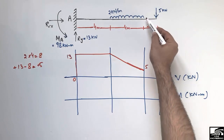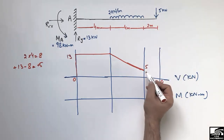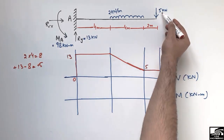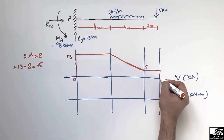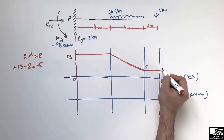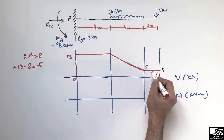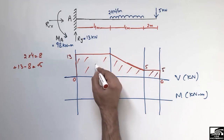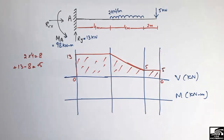After the distributed load region, there is no load so the shear force remains a straight line at +5 kN. Then the 5 kN concentrated load acts downward, bringing the shear force from +5 down to zero. This completes the shear force diagram for the beam.